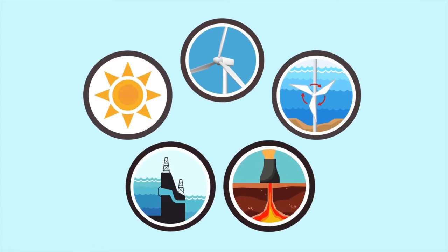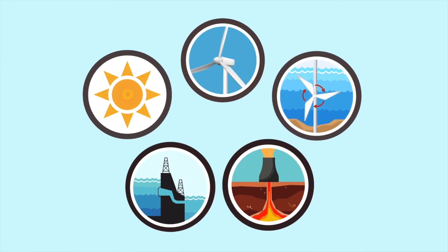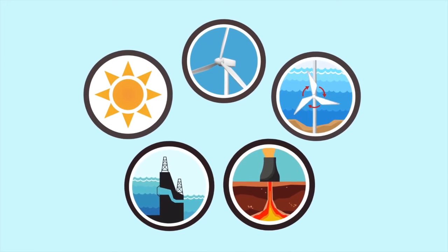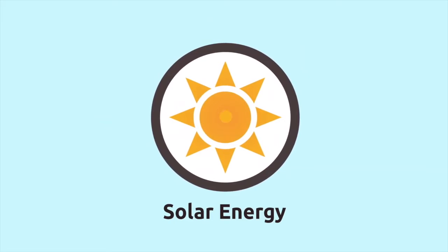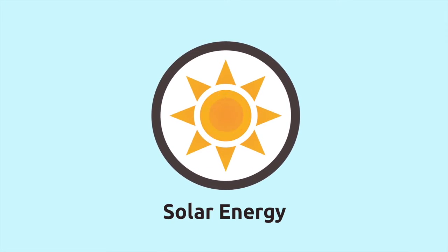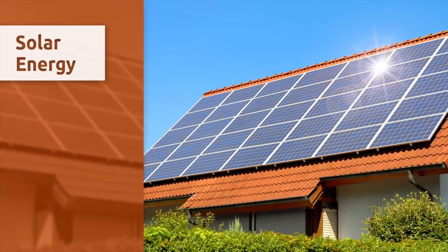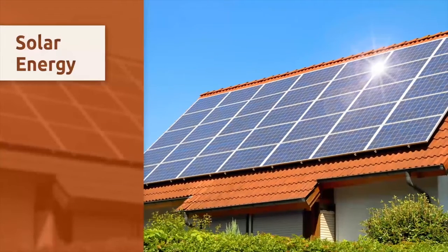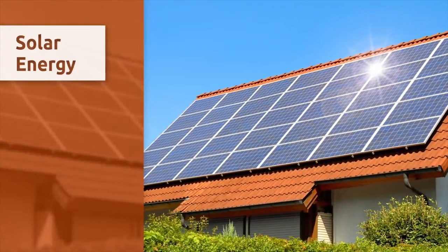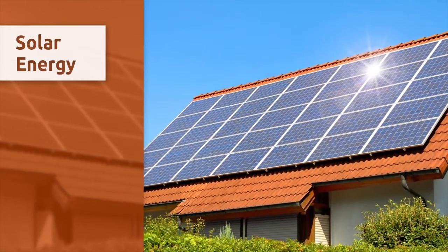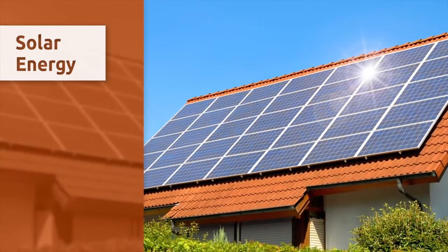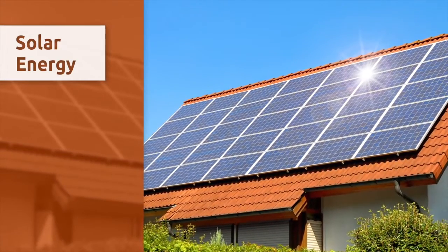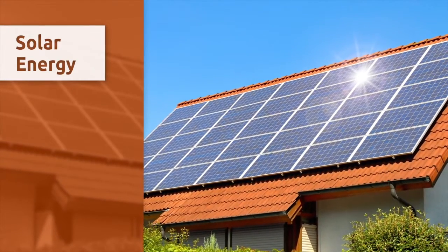These energy sources are present in nature and are naturally replenished — that's why they never run out. These are some of the most well-known renewable energy types. Solar energy comes from the sun and reaches us as light and heat. For example, thanks to these solar panels, we can capture sunlight energy and transform it into thermal energy to heat water in a house.